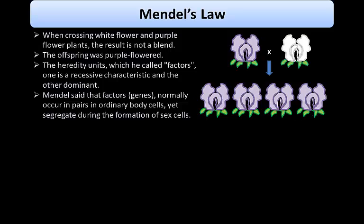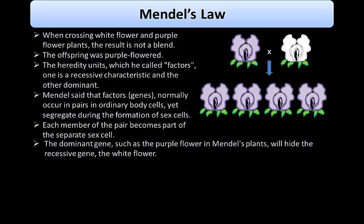Mendel said that these factors — later called genes — normally occur in pairs in ordinary body cells, yet segregate during the formation of sex cells. Each member of the pair becomes part of a separate sex cell. The dominant gene, such as the purple flower, will hide the recessive gene, the white flower. After self-fertilizing the F1 generation and obtaining a 3:1 ratio, Mendel theorized that genes can be paired in three ways: AA, aa, and Aa, where capital A represents the dominant factor and lowercase a the recessive.